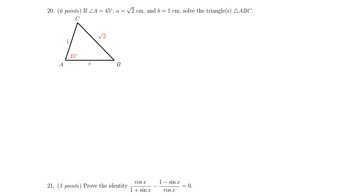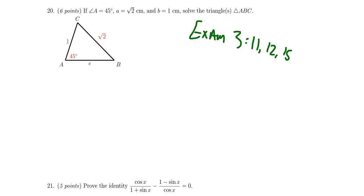Question number twenty: you'll be given an oblique triangle and asked to solve it using a combination of the law of cosines and law of sines. You'll be given three pieces — some combination of sides and angles — and must find the remaining ones. Beware of the ambiguous case: there could be two triangles, one, or none. If there are two triangles, give both solutions for full credit. If there's no solution, provide evidence why. If there's only one solution, explain why there's not a second. That's why this question is worth six points. For more practice, look at questions eleven, twelve, and fifteen from exam three.